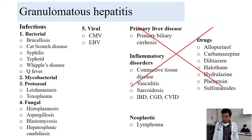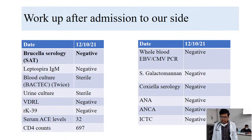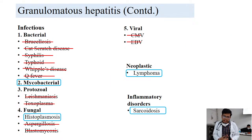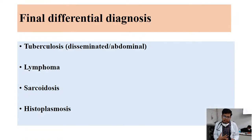Further investigations were sent to narrow down the infectious etiology: Brucella serology, Coxiella serology, repeated CMV and EBV PCR, repeated blood and urine culture, RK39, and CD4 counts — all came back completely normal. After ruling out most infectious etiologies, the remaining differentials were: mycobacterial disease (strong suspicion), Histoplasma (rare), lymphoma, or sarcoidosis — yielding four possible final differentials.